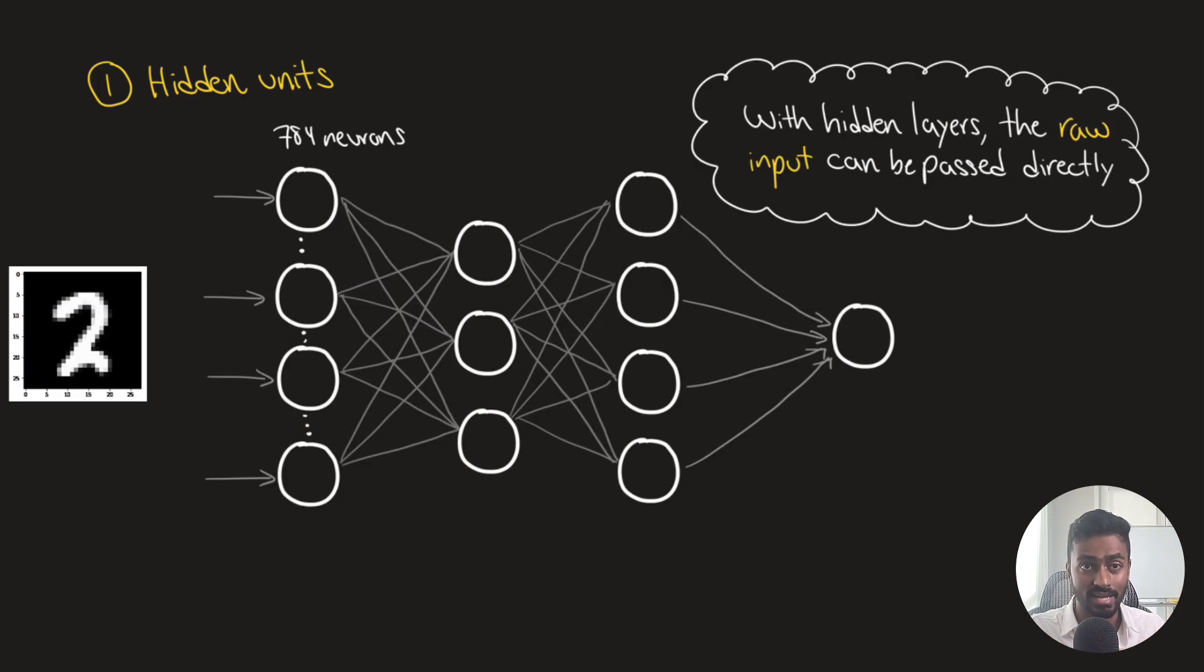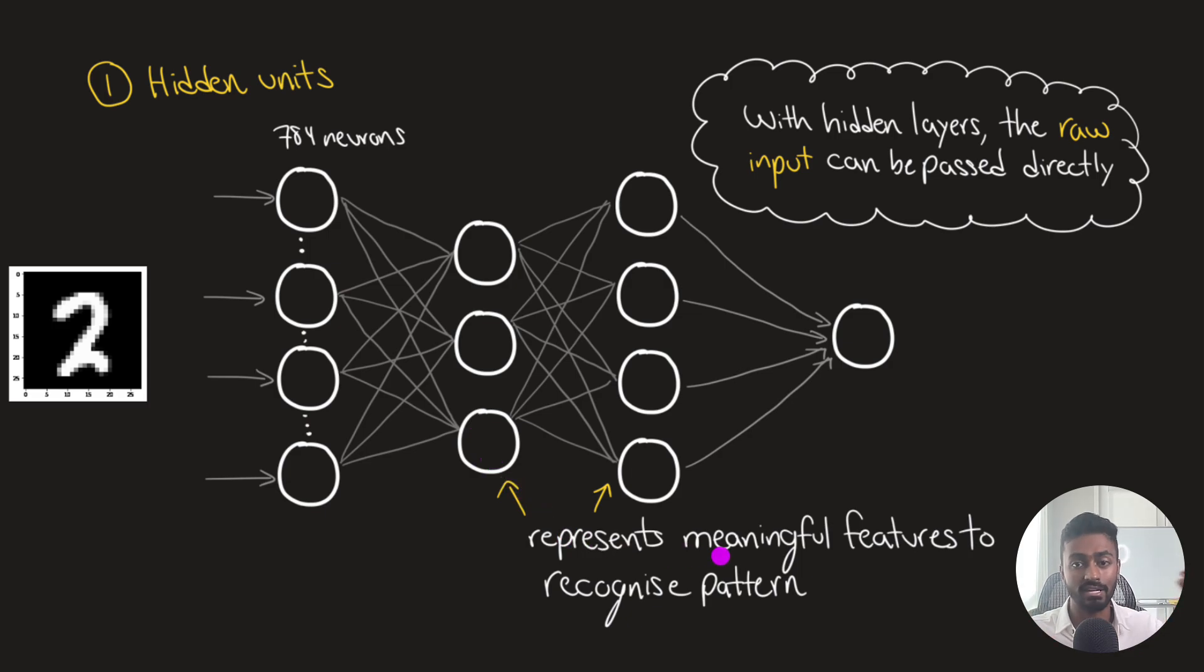But the problem here is that crafting good features is very much a trial and error mechanism, and it can be extremely tedious and difficult to get the right features. So how do we address this? Well, instead of hand crafting features, with hidden layers added, we can now just pass in the raw input directly. So we don't need to handcraft our four features from this image, what we can do is just pass the image directly, where we have this input layer of neurons, which is 784 neurons, one neuron that can represent a pixel. And then each of these hidden units could thus represent meaningful features to recognize a pattern.